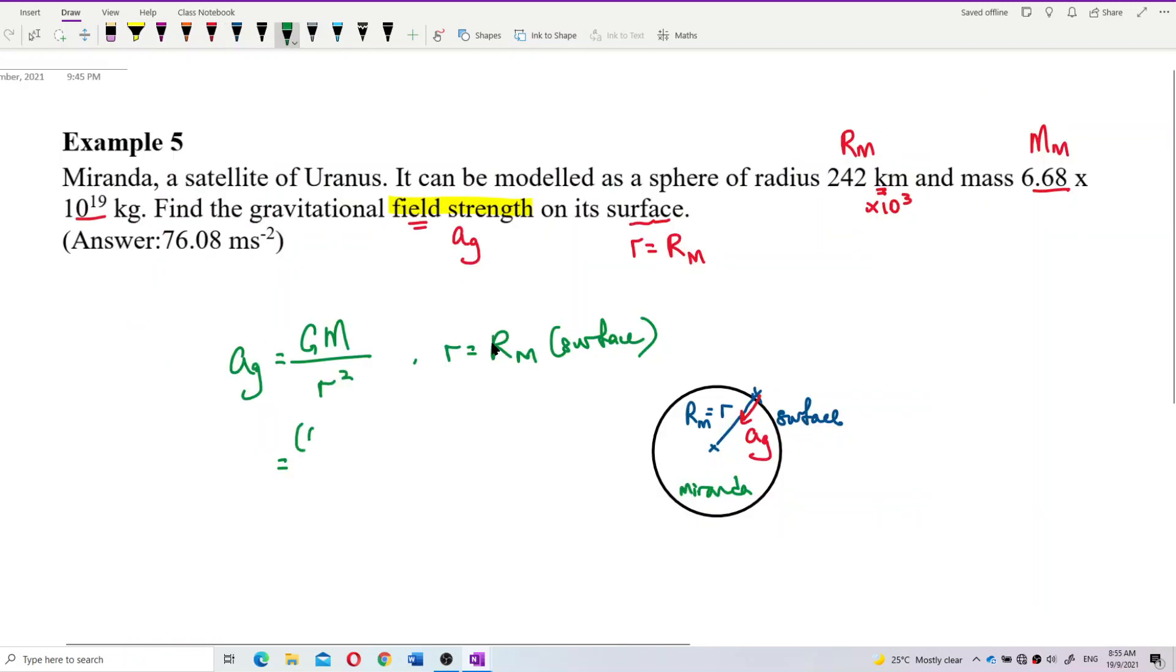So, let's write it down. 6.67 exponent negative 11. And then, mass of the Miranda is 6.68 exponent 19. And then, divide by the distance is just on the surface. So, we just use the radius of Miranda. The radius is 242 kilometer change to meter. So, exponent 3. This is meter already. Don't forget to square.